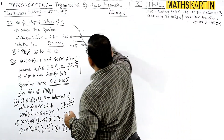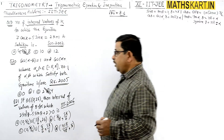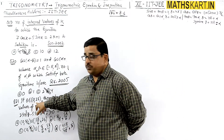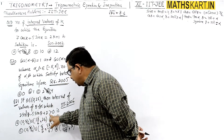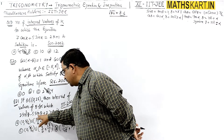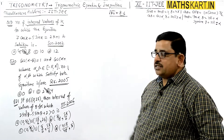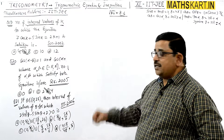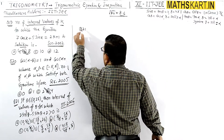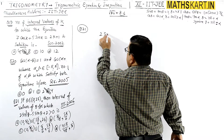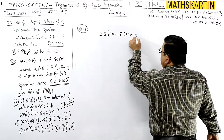Next, question number 21: if θ belongs to 0 to 2π, then find the interval of values of θ for which the inequality 2sin²θ - 5sinθ + 2 > 0 holds. We need to find which interval satisfies this inequality, given θ between 0 to 2π.